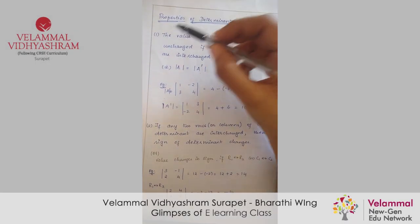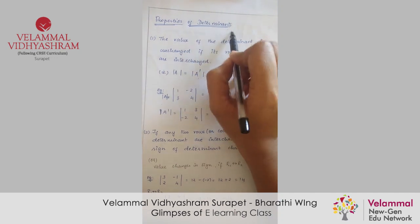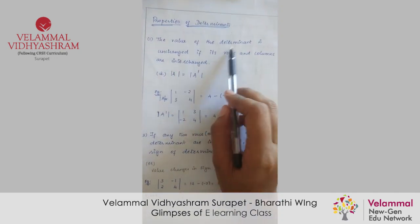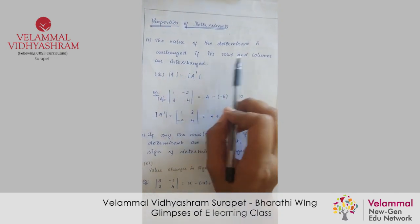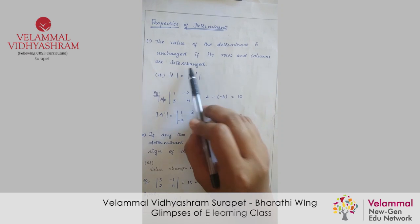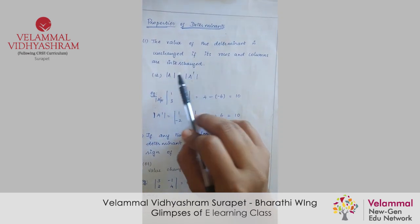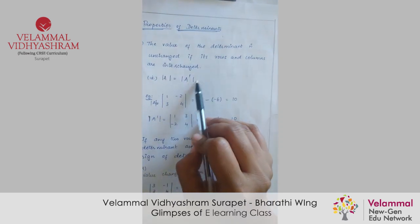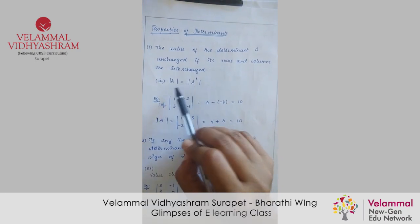Good morning children. Today we are going to learn about properties of determinants. The value of the determinant is unchanged if its rows and columns are interchanged — that means if we take a transpose of a matrix, we will get the same determinant value.